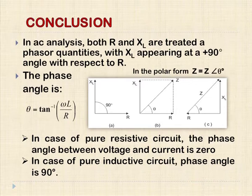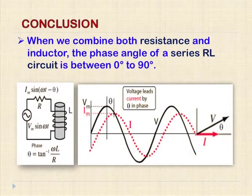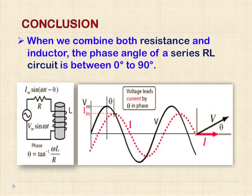In the case of a pure resistive circuit, the phase angle between voltage and current is 0. In the case of a pure inductive circuit, the phase angle is 90 degrees. But if we combine both resistance and inductor, the phase angle between the resultant voltage and current is between 0 to 90 degrees, and here the voltage leads the current by the theta angle.